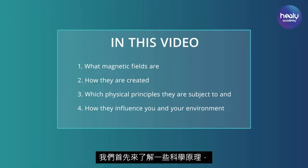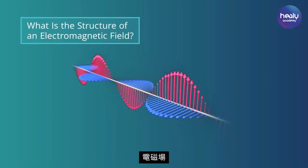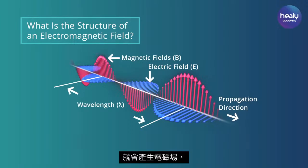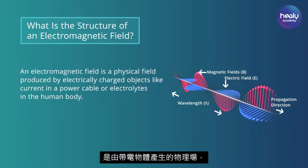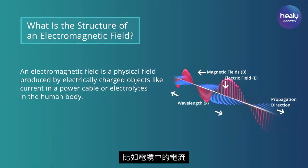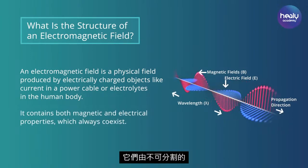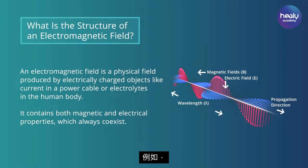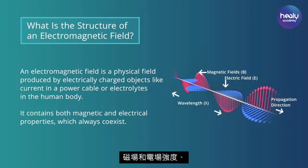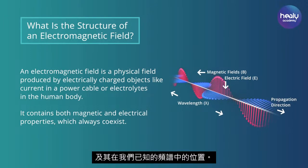We will start with some scientific principles, more precisely with the structure of electromagnetic fields. Electromagnetic fields are created as soon as charges or charged particles move or change their velocity. In other words, an electromagnetic field is a physical field produced by electrically charged objects like current in a power cable or electrolytes in the human body. As the name suggests, they are composed of inseparable electrical and magnetic components. Together, the physical parameters of these two components — for example, magnetic and electric field strength, wavelength and flux direction — define the specific properties of an electromagnetic field and its position in the spectrum known to us.